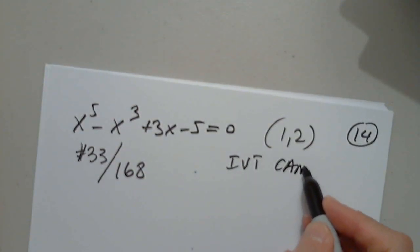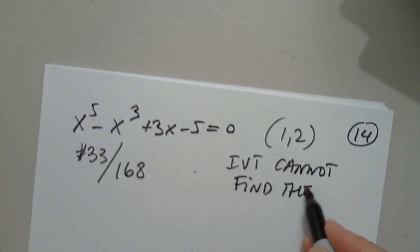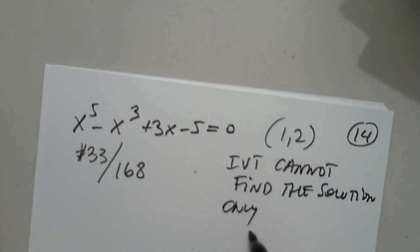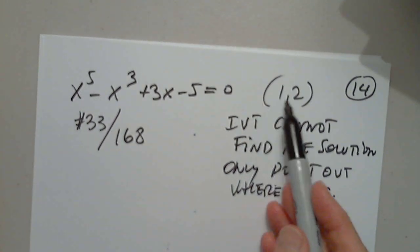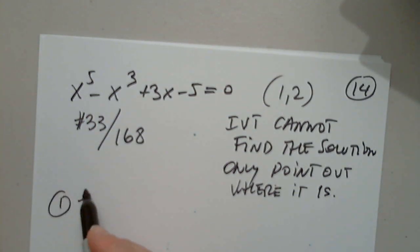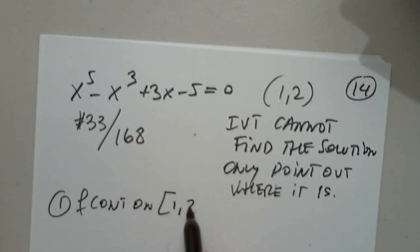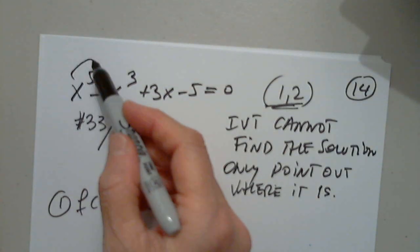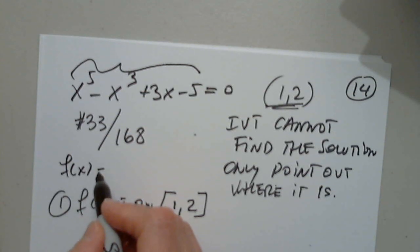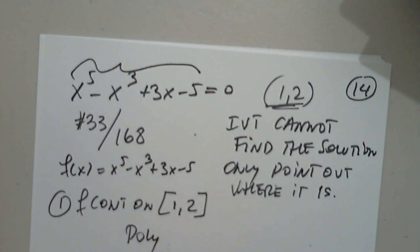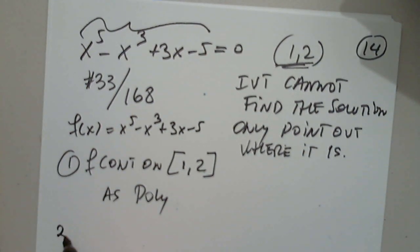And it says use the intermediate value theorem to show that there is a solution of the equation in the given interval. IVT cannot find the solution. Only points out where it is. It cannot find it. It will only say it's between one and two. So number one, I will say f continuous on the closed interval one comma two, as you see, a unit interval. Yes, it's a polynomial. This is f of x, of course. So f of x is x to the fifth minus x to the third plus 3x minus 5. That's a polynomial function.